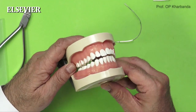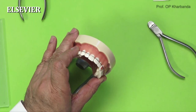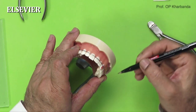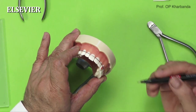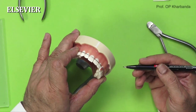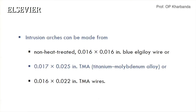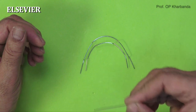Now let us see the steps in making the utility arch. The first step involves selection of an appropriate arch form and the right wire. The newer wires, which are more flexible, have a longer duration of action and lighter force, and are more optimally used for making a utility arch. TMA type of wire is the most commonly used wire for this purpose.